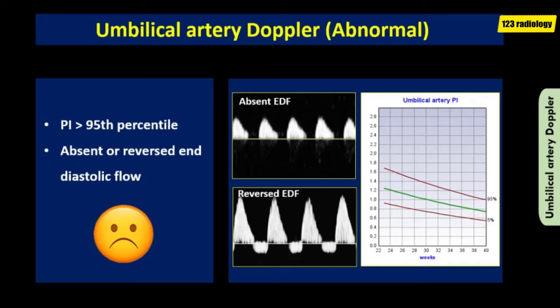Once the resistance reaches a critical level, blood flow during diastole will be impeded — this is called absent end-diastolic flow. Then blood flow will be reversed back towards the fetus during fetal diastole — this is called reversed end-diastolic flow. The natural progression seen in a deteriorating fetus would be a steady increase in the umbilical artery pulsatility index, followed by intermittent then persistent absent end-diastolic flow, and finally reversed end-diastolic flow. A low umbilical artery pulsatility index is of no significance.